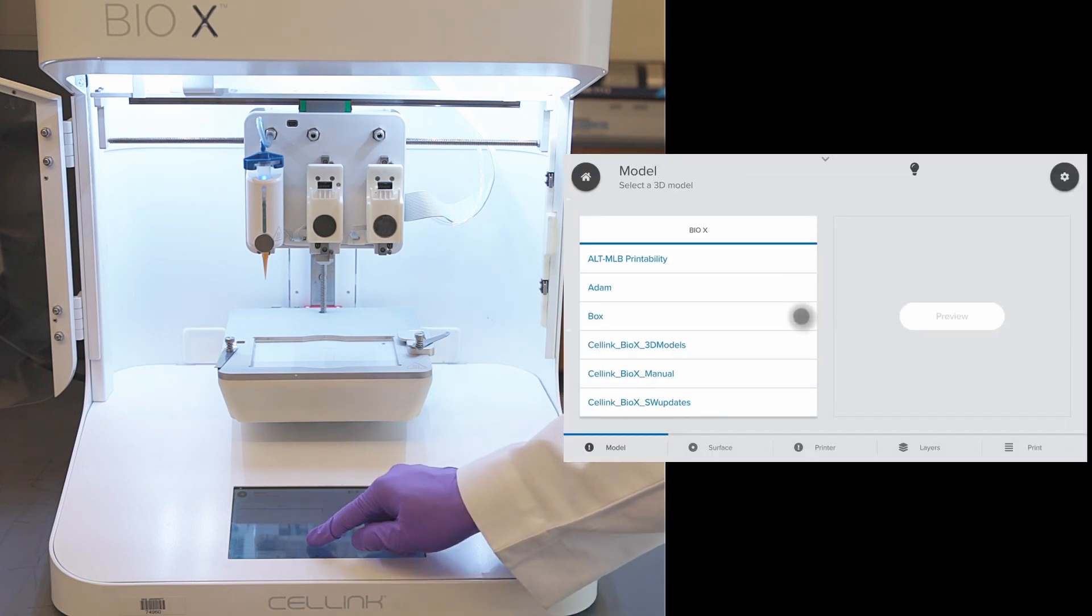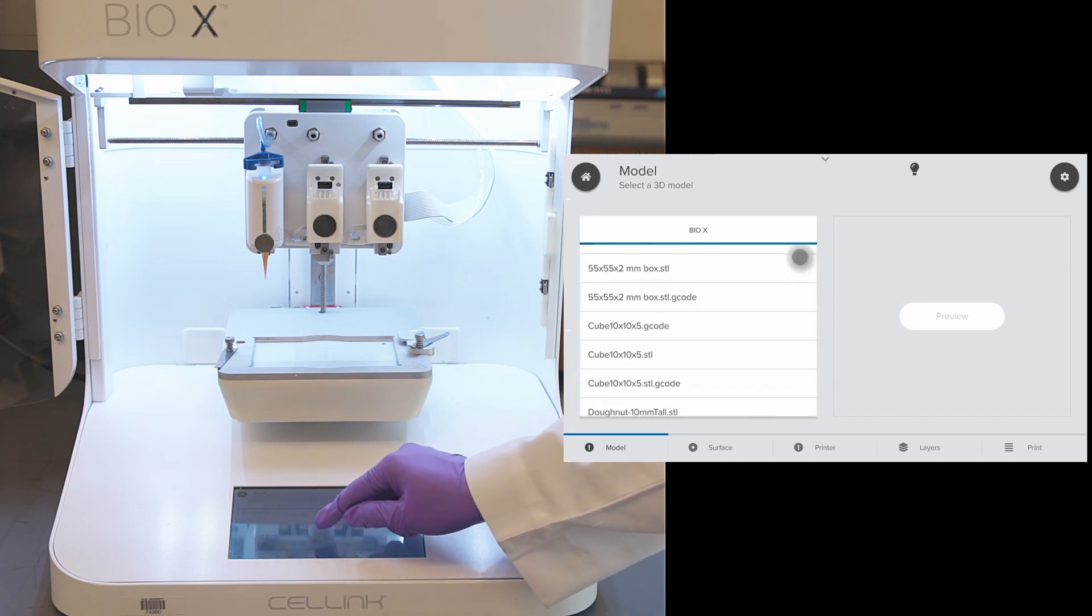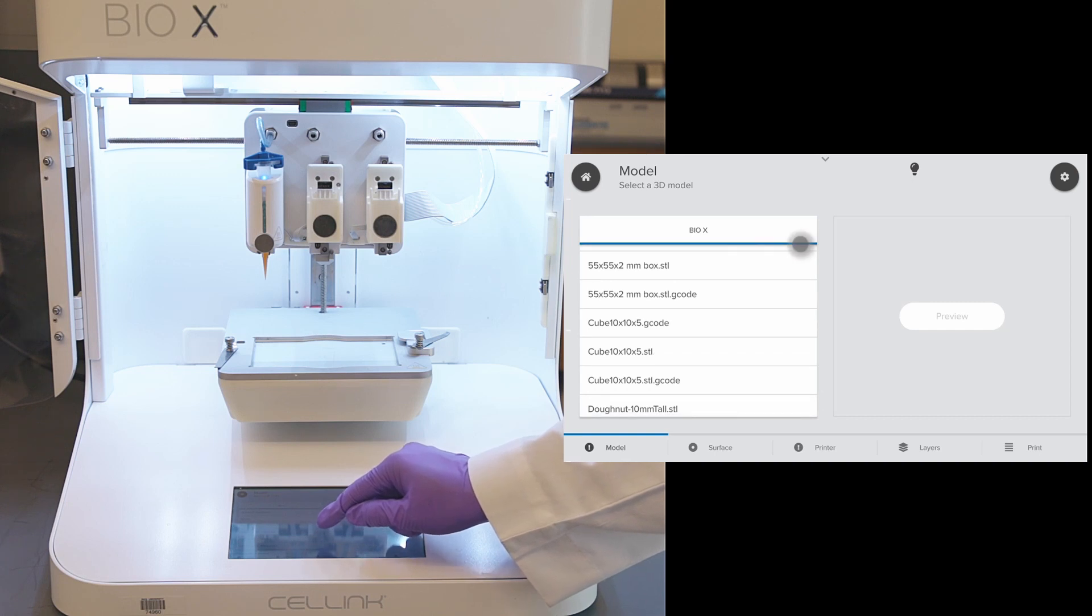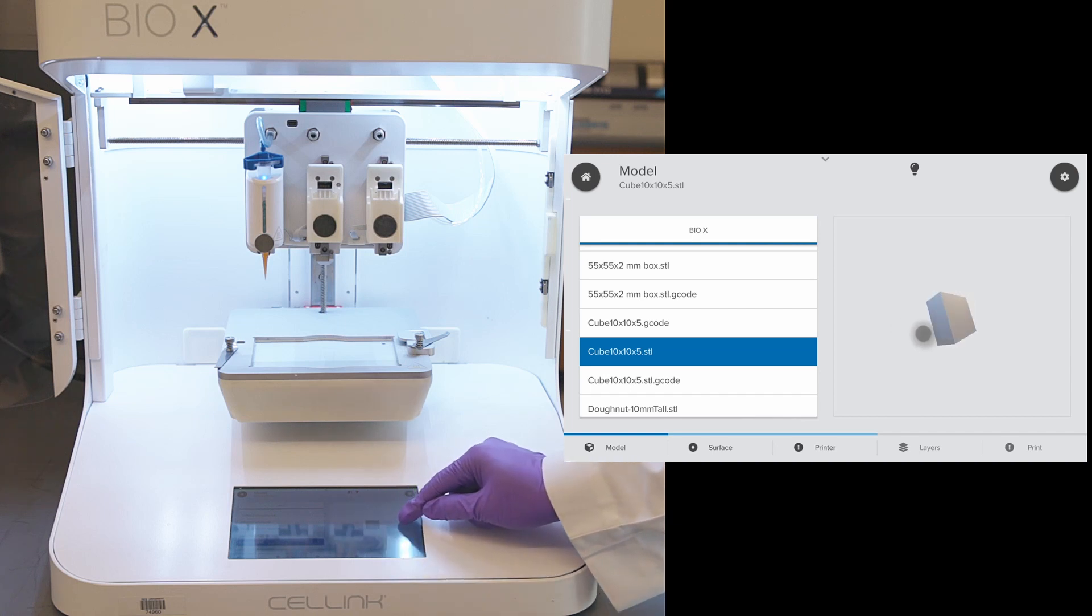From the list here, choose the STL file. We can browse to the folders that are on the flash drive. The BioX accepts both STL files and gcode files. Today, we will be using one of the BioX 3D models. We can click on preview to have a look at the file to make sure it is the right one.